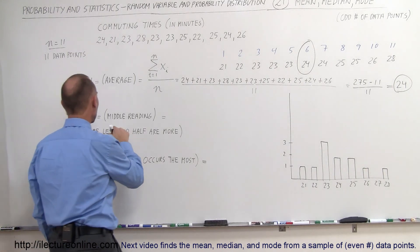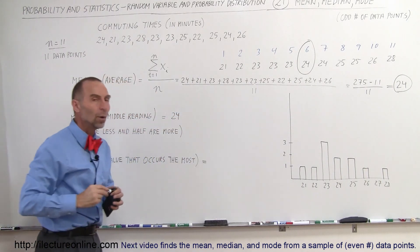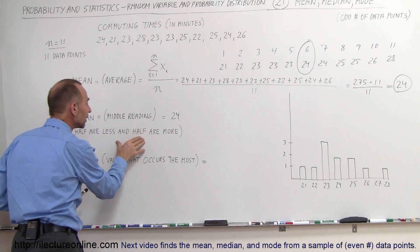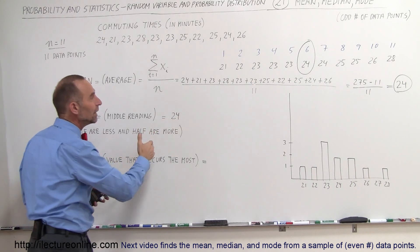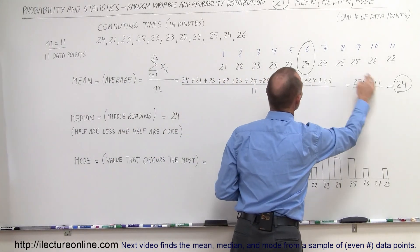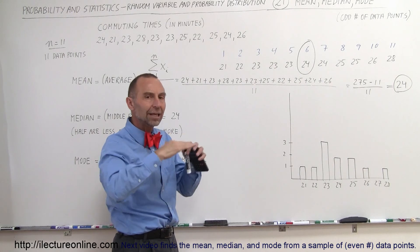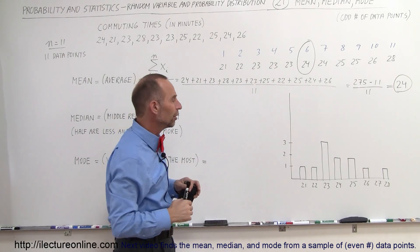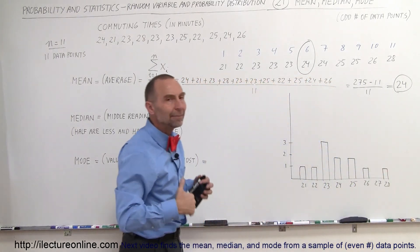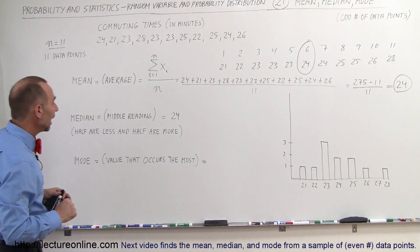More often, it doesn't. So in this case, the middle reading is equal to 24. That's the very middle one. Typically speaking, that means that half of the readings have a smaller value than the median, and half of the readings have a bigger value than the median. If the median is close to the average or mean, that means that the distribution is somewhat even. It's not skewed to one side or the other. If the distribution is skewed to one side, then the mean and the median are typically not the same. And we'll show you some examples of that.